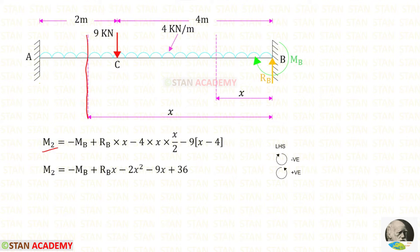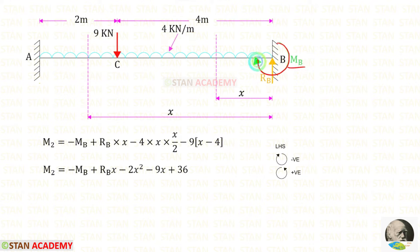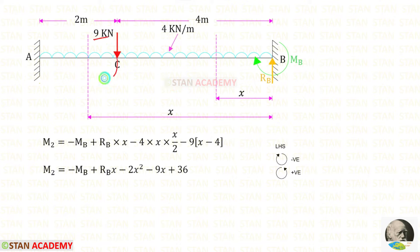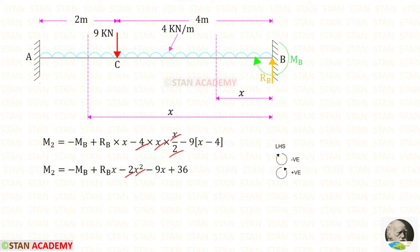Now let us find M2, the moment about the second section. Up to the section we have Mb, the vertical reaction Rb, the UDL, and the point load. Mb is negative (clockwise), Rb is positive with distance x, the UDL is negative giving x squared term, and the point load of 9 kN is also acting clockwise so it is negative. The distance for the point load is x minus 4. Multiplying minus 9 gives those two additional terms.